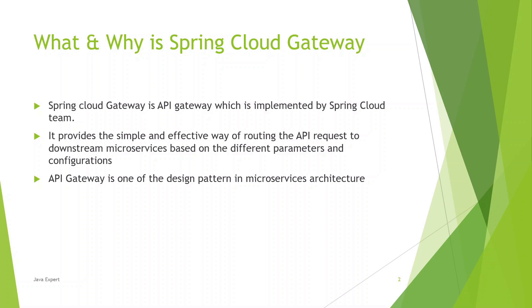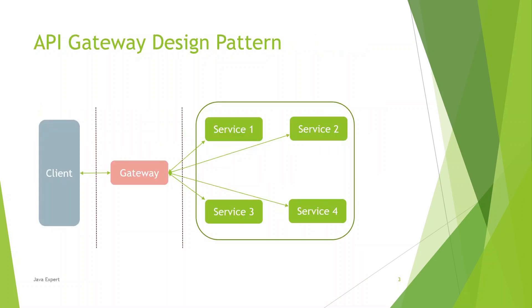If you look at this simple diagram, you can understand the API gateway design pattern easily. Consider we have four different microservices and there is a client. The client will always interact with the gateway only — it will not be aware of the actual host and port where the microservice is running. The gateway has the intelligence to route the request to the appropriate microservice based on its configuration.